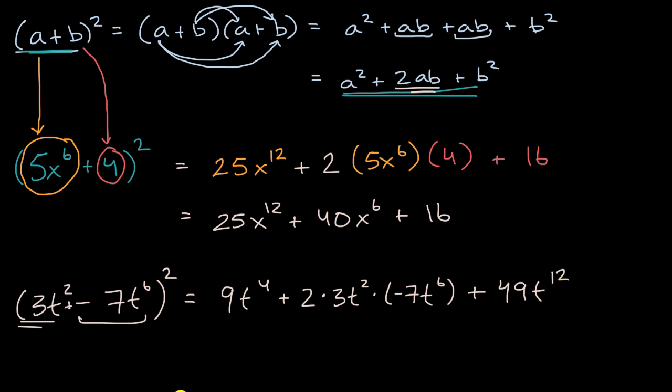t to the twelfth power. And so this is going to be equal to 9t to the fourth. And let's see, 2 times 3 is 6 times negative 7 is negative 42. And t squared times t to the sixth, we add the exponents, we have the same base. So it's going to be t to the eighth. And then we have plus 49t to the twelfth power.